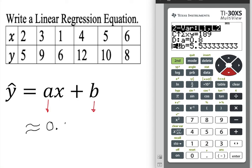0.80x plus b is going to be approximately 5.53. So that is my regression equation.